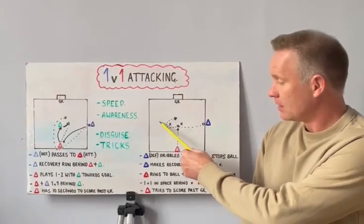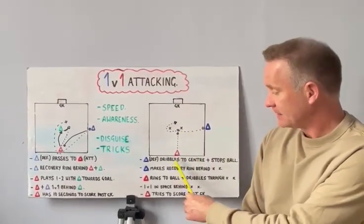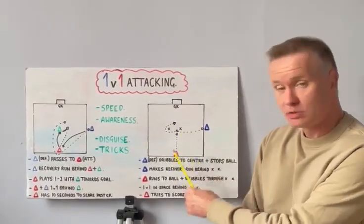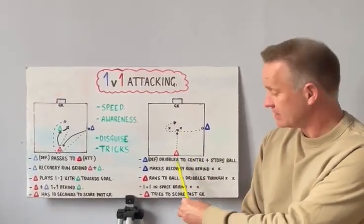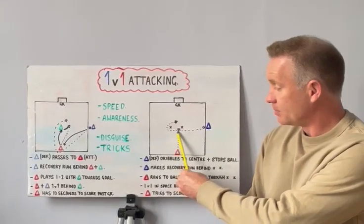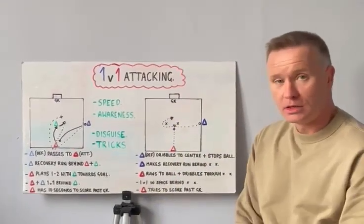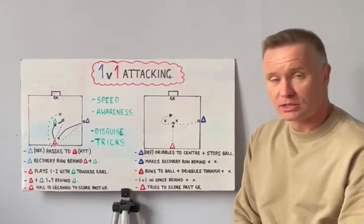The defender leaves the ball and makes a recovery run. The attacker, as soon as the ball is stopped, follows, gets the ball, and dribbles in for a 1v1.